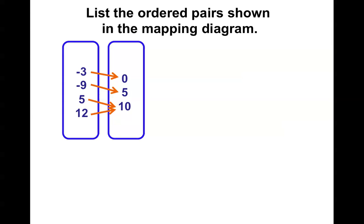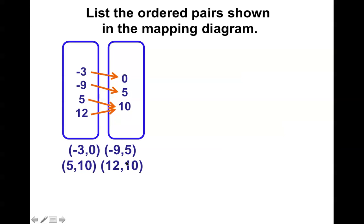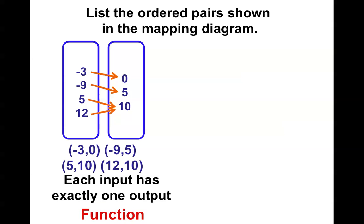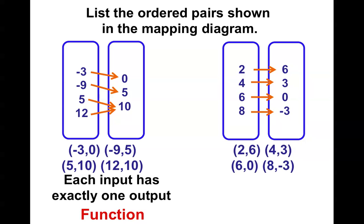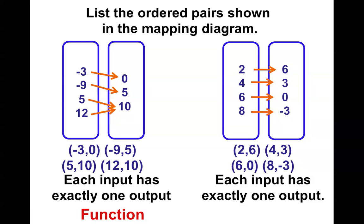Is this a function? Think about the ordered pairs. What's the answer for negative three? Zero — one answer. What's the answer for negative nine? Five — one answer. What's the answer for five? Ten — one answer. What's the answer for twelve? Ten — one answer. Now, it's okay for two x values to have the same y value, just like it's okay for two people to have the same answer to a question. There's only one output for each input, so it's a function. Over here, we also have all different x values, so we have a function as well.